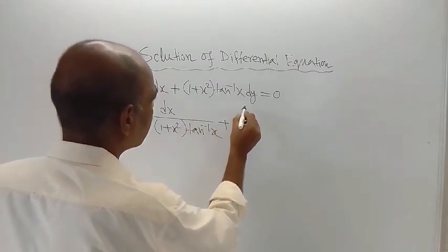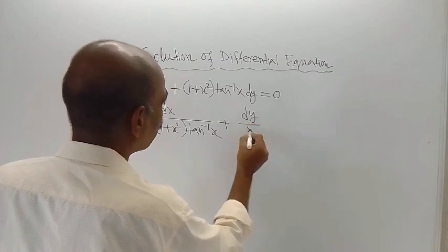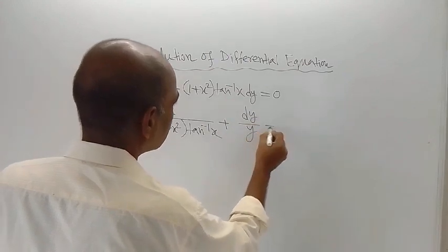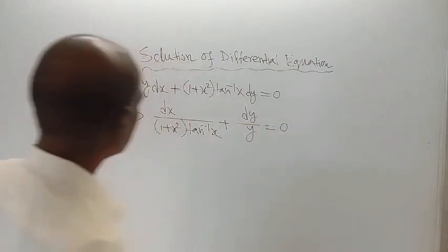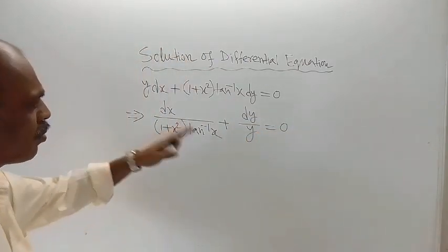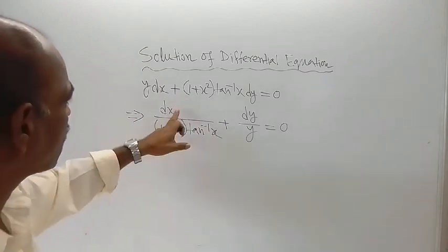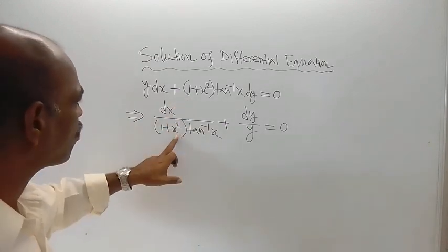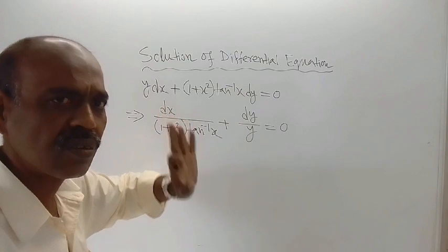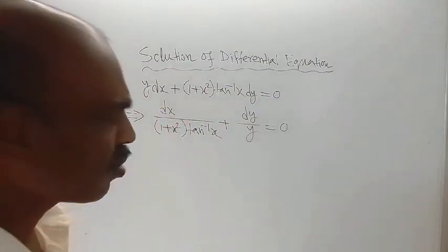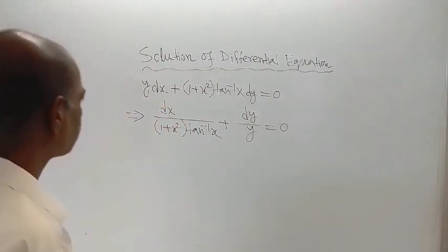...and the second term, dy by y, is equal to 0. Now you can see that variables are separated: here only x is there, and here only y is there. So now variables are separated.